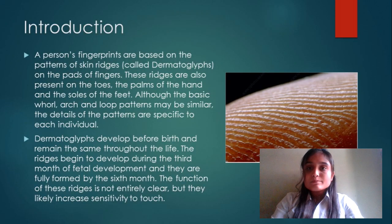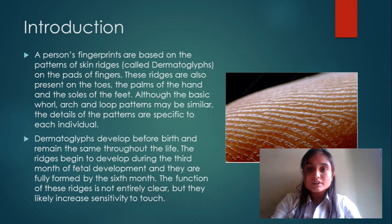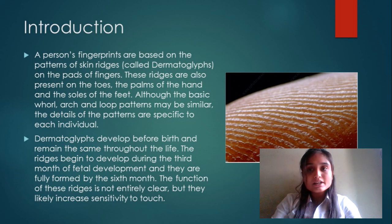A person's fingerprints are based on the pattern of skin ridges called dermatoglyphics, on the pad of fingers. These ridges are also present on the toes, the palm of the hand, and the sole of the feet. Although the basic whorl, arch, and loop pattern may be similar, the detail of the pattern is specific to each individual.